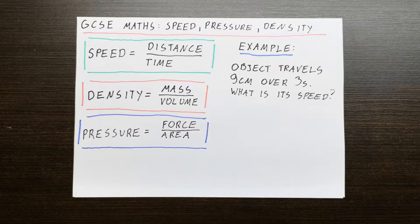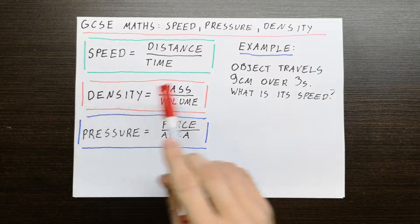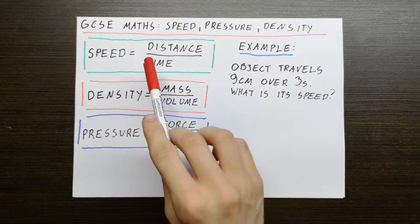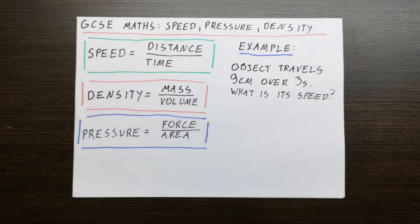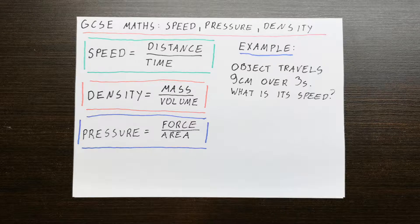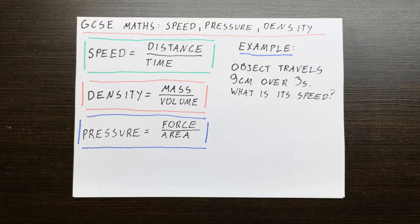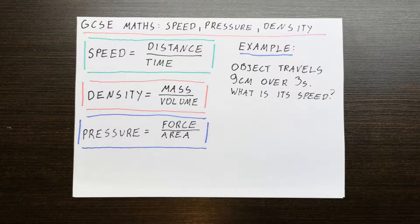Speed is essentially how fast something is going and it is determined by the following equation: Speed equals distance over time, which makes sense. For example, if you pass two kilometers in an hour, you're going at a speed of two kilometers per hour.